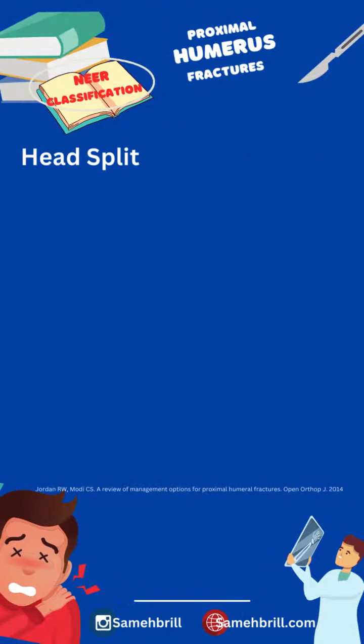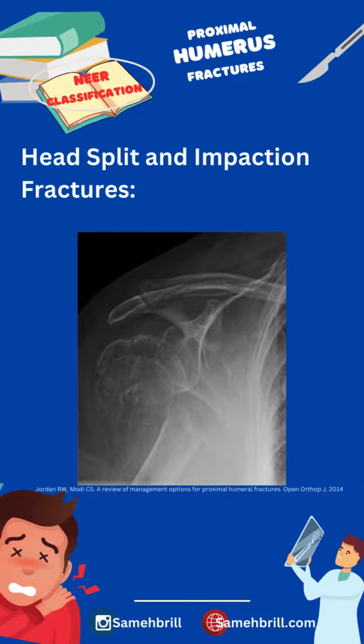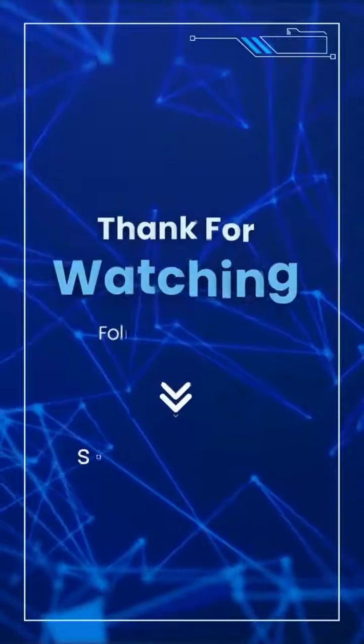Finally, head splitting and impaction fractures are considered to have articular loss and have a poor prognosis, thus needing prosthetic replacements.